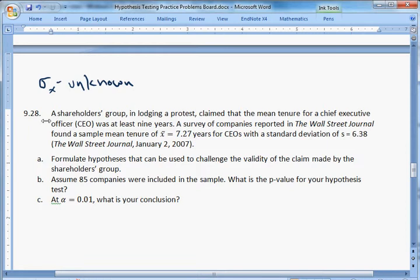Without further ado, this is question 28, chapter 9. A shareholders group in launching a protest claimed that the mean tenure for a chief executive officer, CEO, was at least nine years. At least nine years claimed. A survey of companies reported in the Wall Street Journal found a sample mean tenure of x bar equals 7.27 years for CEOs with a standard deviation of s equals 6.38.